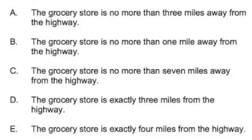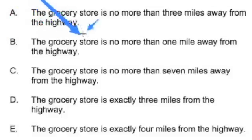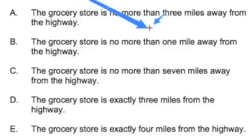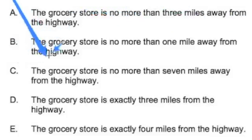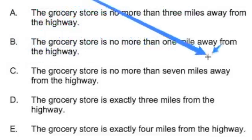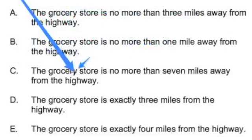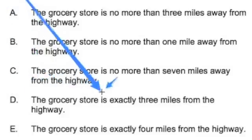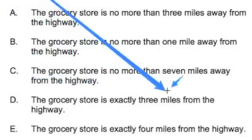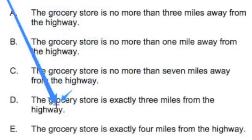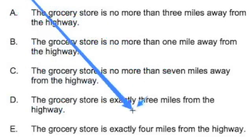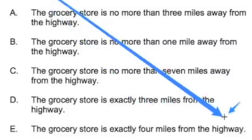A, the grocery store is no more than three miles away from the highway. B, the grocery store is no more than one mile away from the highway. C, the grocery store is no more than seven miles away from the highway. D, the grocery store is exactly three miles away from the highway. Or E, the grocery store is exactly four miles away from the highway.